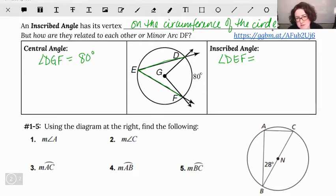What I would suggest doing is on your own, you've got a link on here, the HTTPS double slash GGBM dot AT. That's actually a demo that you can go and play around with. I'll also link to it on Schoology. That'll show you that no matter how you pull those angles around a circle, that relationship is always going to hold true, that the inscribed angle is actually going to be half of the central angle.